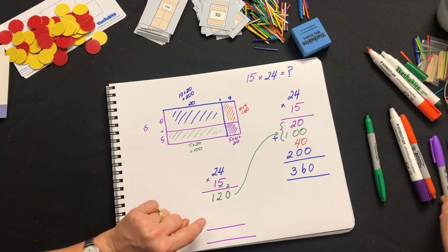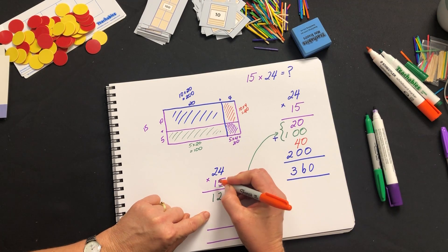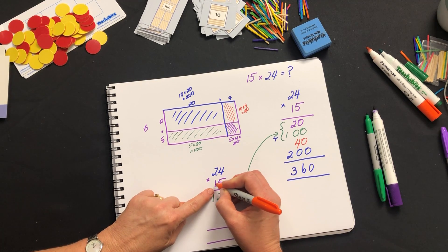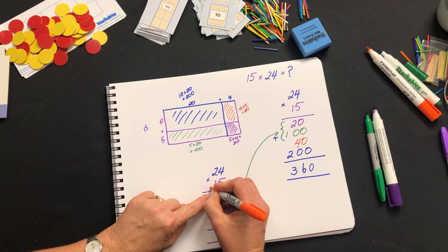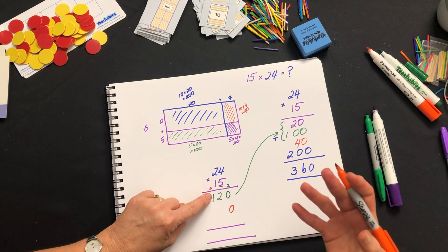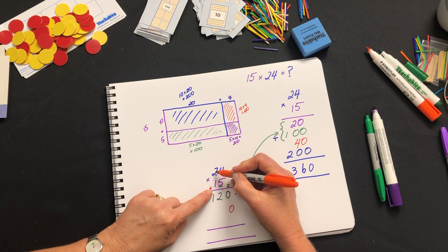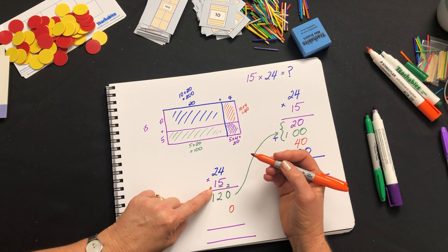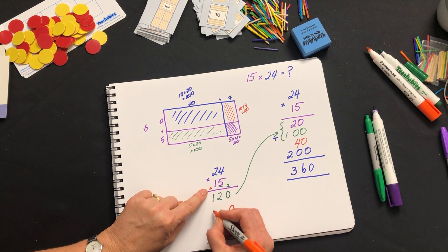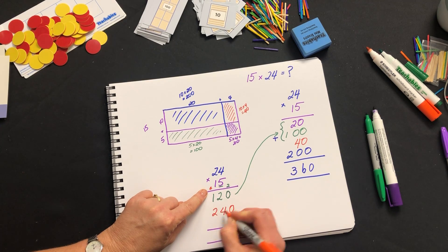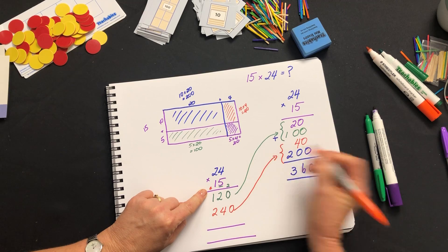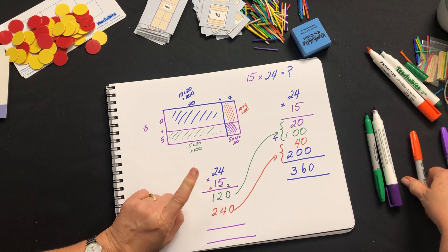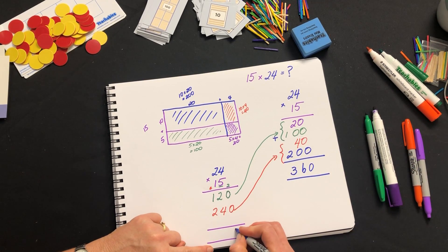As we do the next step we now multiply by 10. 10 times 4 is 40. We carry the 4 which is in fact 4 tens. 10 times 20 is 200 plus the 4 tens is 240. We've now done those two steps. And then to finish off we add.